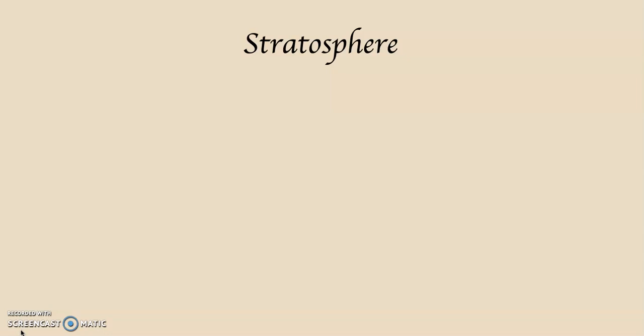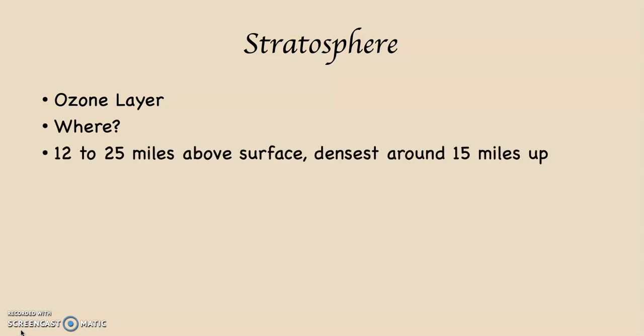The most important component of the stratosphere, especially for us as human beings and life on planet Earth, is the ozone layer. The ozone layer is the protective layer of ozone molecules that's centered primarily in the stratosphere. Let's unpack that backwards. Where is it? Overwhelmingly between 12 and 25 miles above the surface, and it's densest at about 15 miles up. As you can see, this is solidly in the stratosphere.